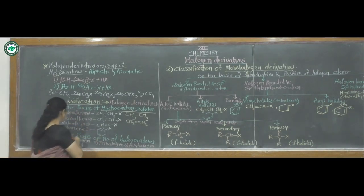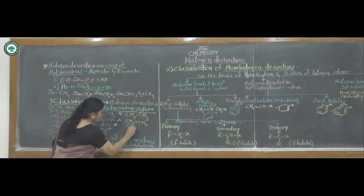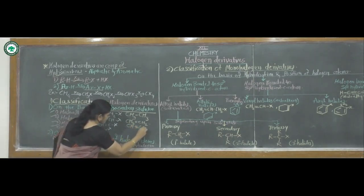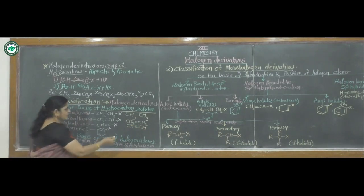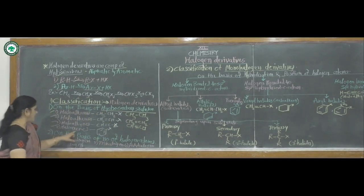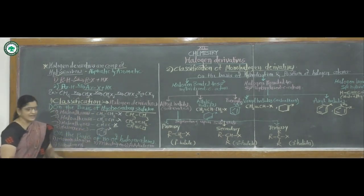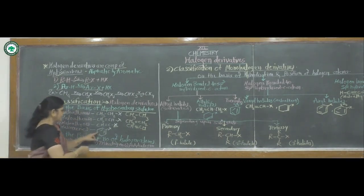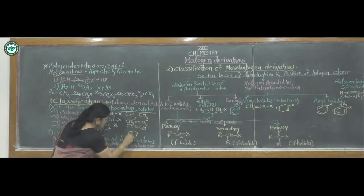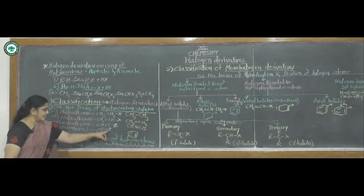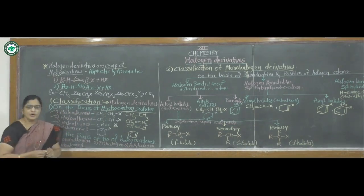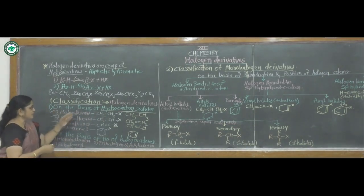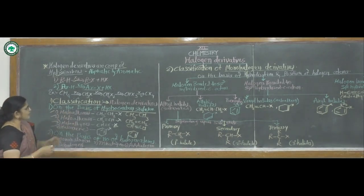In haloalkynes, the parent alkyne is CH≡CH. One hydrogen atom is replaced by a halogen atom and it forms a haloalkyne. In haloarenes, one of the hydrogen atoms of the benzene nucleus is replaced by a halogen atom and it forms a haloarene. In this way, these are classified on the basis of hydrocarbon skeleton.